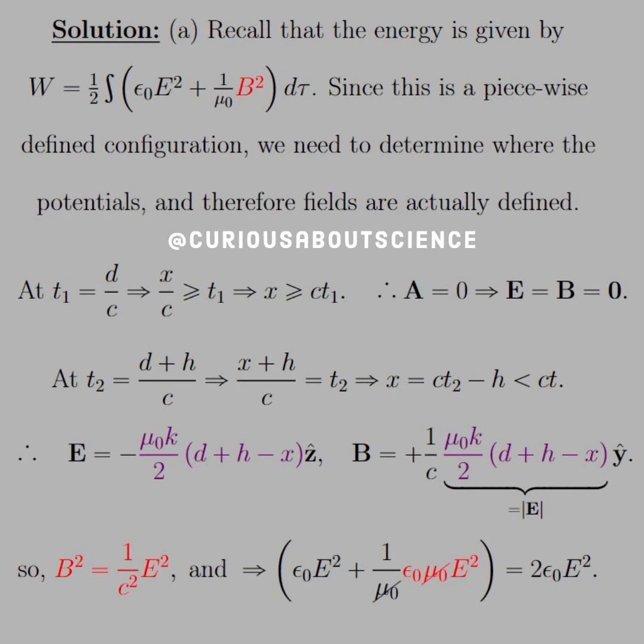Alright, first part of the setup, done. Now, on to our solution. So, we need to recall that the energy is given by W equal 1 half, than the integral with E squared and B squared D tau, with whatever multiple to make the units match. Since this is a piecewise defined configuration, we need to determine where the potentials, and therefore the fields, are actually defined. And here's where things get really tricky. We just have to take our time.